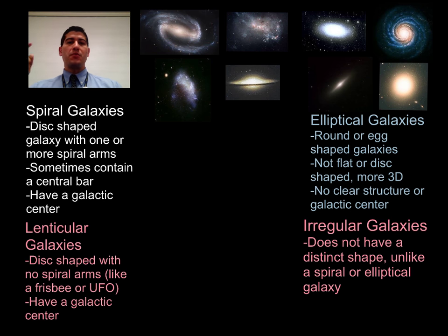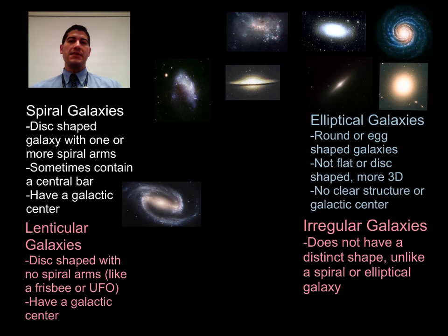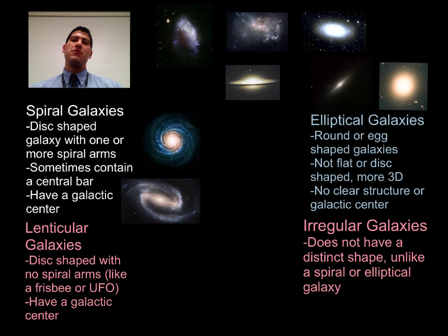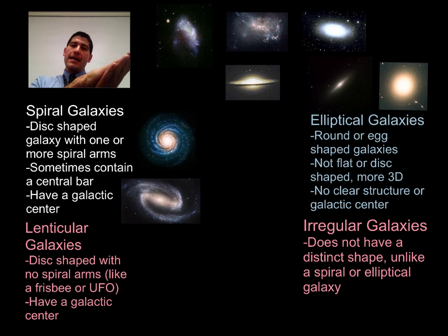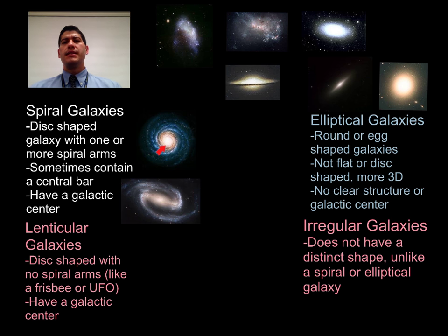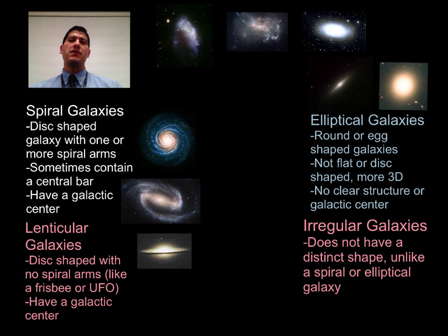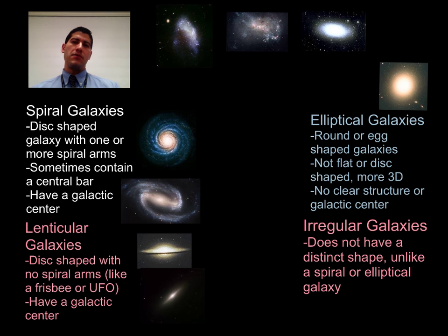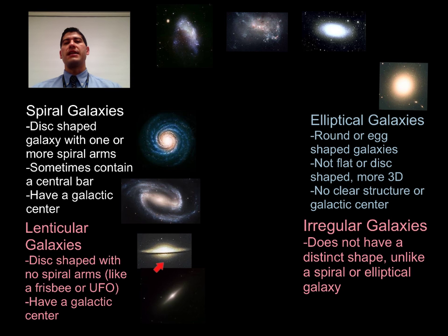Spiral galaxies are what you probably think of when you hear the word galaxy. They have these distinct spiral arms. They're flat, like a frisbee, and have a central bulge or galactic center, which you can see in these pictures — a dense cluster of stars at the middle of the galaxy. Lenticular galaxies share most of the characteristics of spiral galaxies, but they don't have spiral arms. They sort of look like a UFO a lot of the time, and often have a larger galactic center than spiral galaxies.